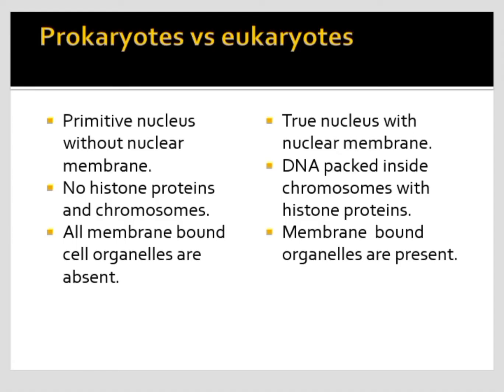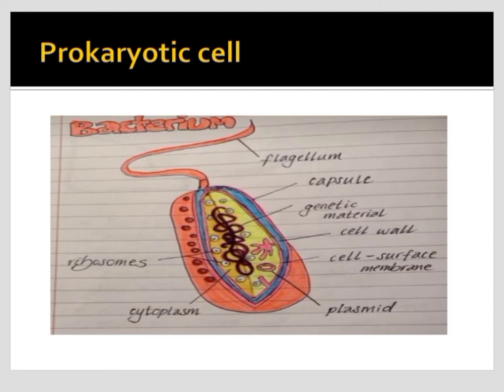Prokaryotes do not have a true nucleus — they contain a primitive nucleus, meaning without a nuclear membrane around the genetic material. Whereas in eukaryotes, they contain a true nucleus with a nuclear membrane. This primitive nucleus of the prokaryotes is present in the cytoplasm, along with plasmids, and they do not have any histone proteins.